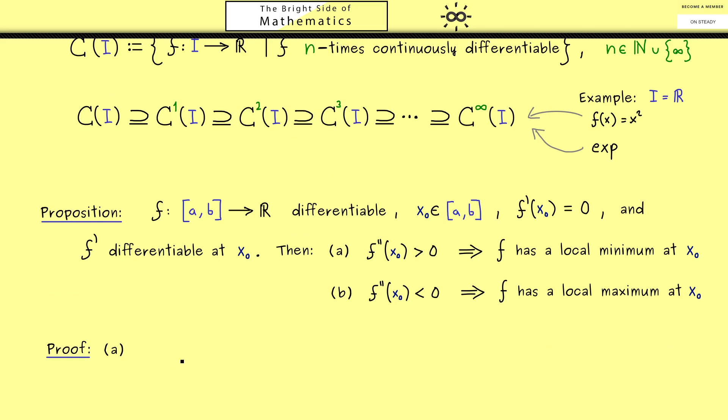However we only have to prove one of the two parts because the proof of the other one looks very very similar then. Hence let's assume that f'' of x0 is positive. I write it in this way because then on the right hand side here we can use the definition of f'' which is the differential quotient of f'.